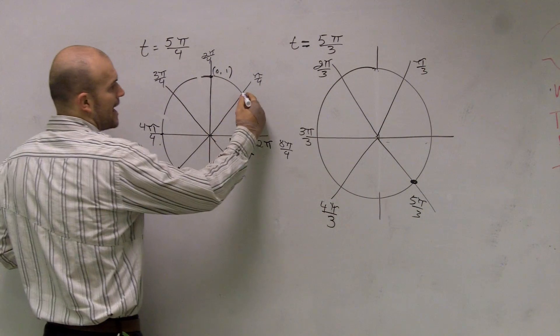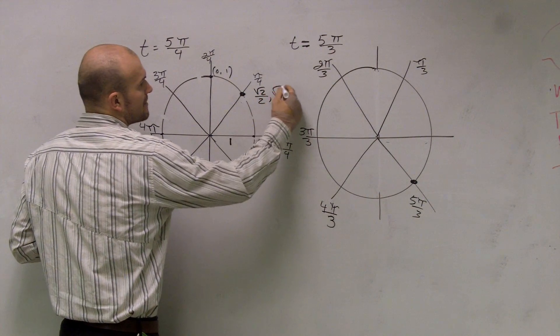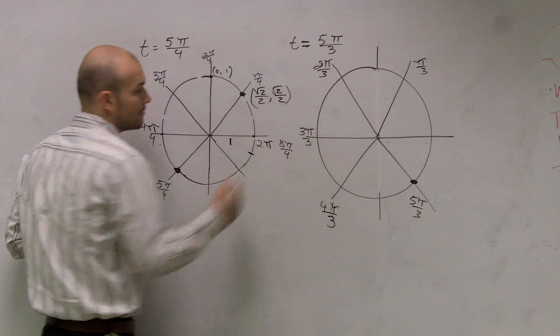A couple points I want you to remember. Pi over 4, if you guys remember, was square root of 2 over 2 comma square root of 2 over 2, right?